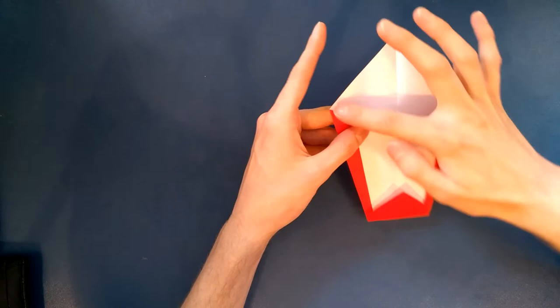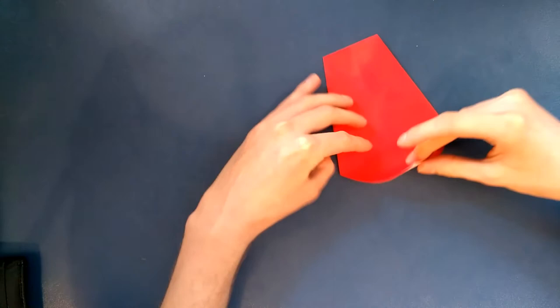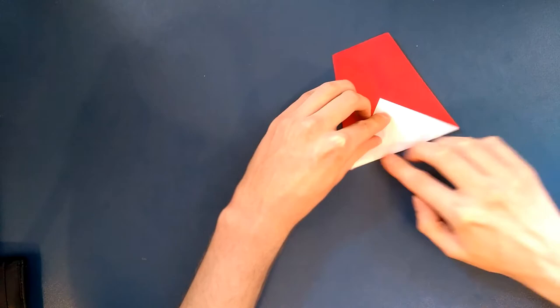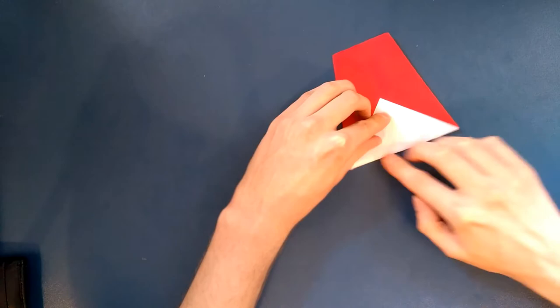The next thing you want to do, and the last thing, is to just take this top sort of white triangle here and we want to just fold the tip backwards like this, just to get that out of the way.